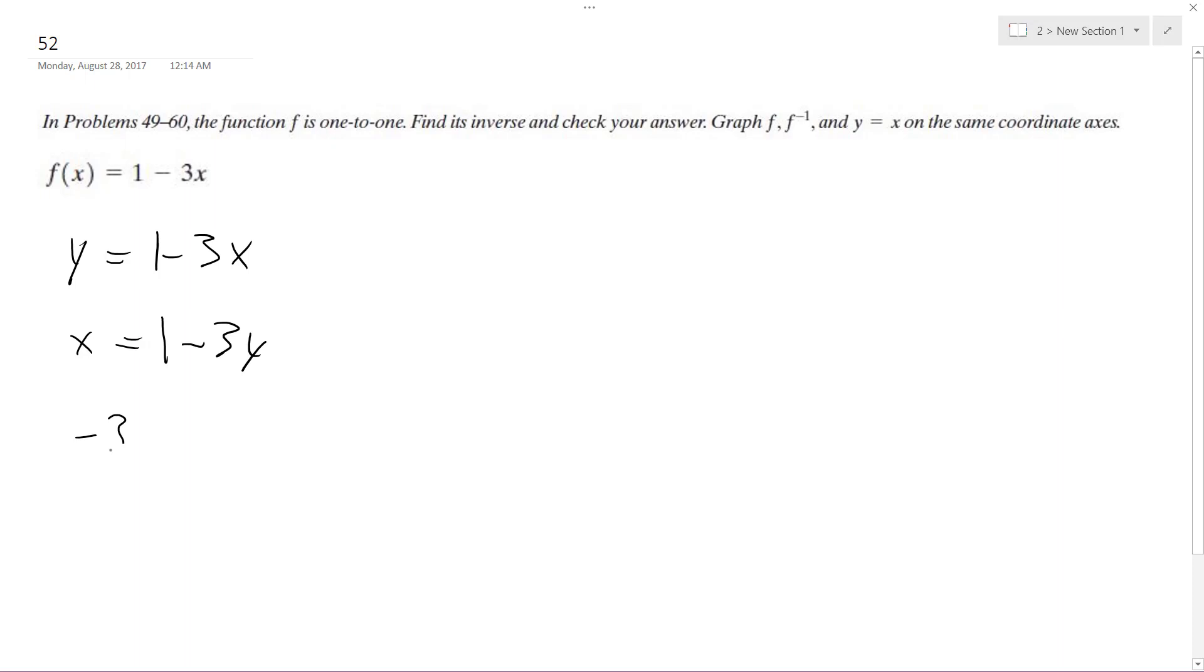So we get negative 3y. What I did is I subtracted 1 from both sides, is equal to x minus 1, and then divide by negative 3. I get y is equal to negative x over 3 plus 1 over 3.